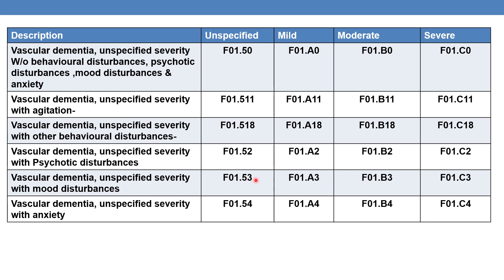Coming to fifth character 3, which indicates mood disturbances: unspecified vascular dementia with mood disturbances is given by F01.53, mild vascular dementia with mood disturbances by F01.A3, moderate by F01.B3, and severe vascular dementia with mood disturbances by F01.C3.